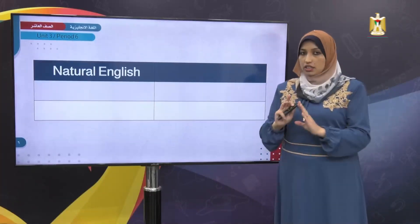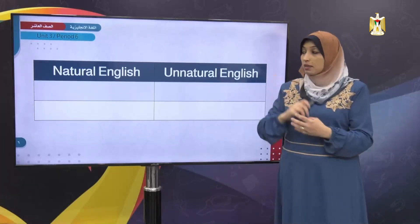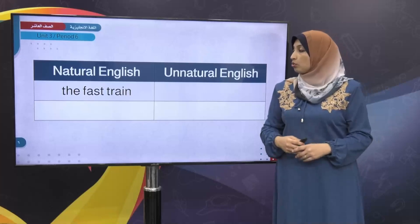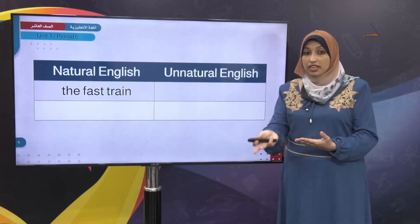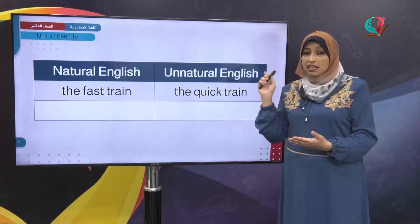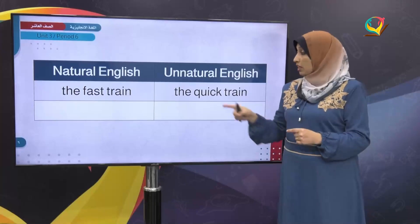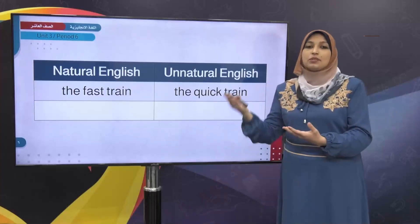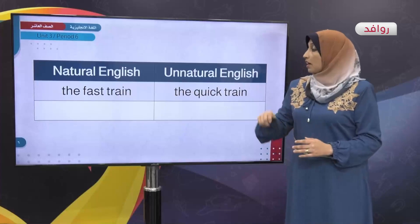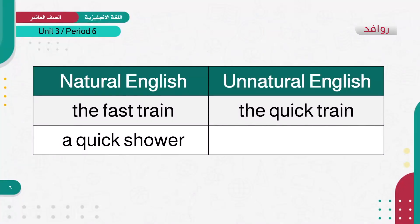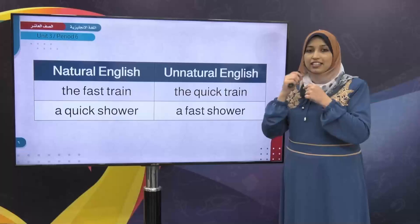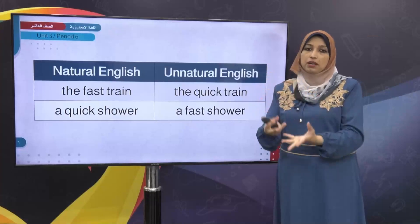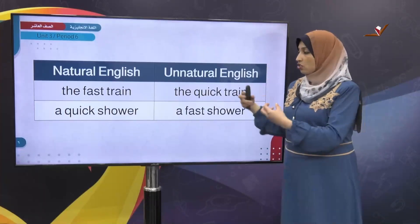Here is an example. Natural English versus unnatural English. For example, it is natural to say 'the fastest train' — a fast train. But when we hear 'the quick train,' it sounds wrong. Both 'fast' and 'quick' mean speedy, but 'the fast train' is what we are used to, not 'the quick train.' That combination sounds wrong. On the other hand, 'a quick shower' is considered normal and natural, but 'a fast shower' sounds wrong.